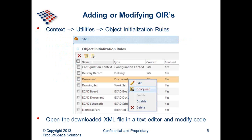Taking a look at adding or modifying these OIRs — to access them, you do that from the context, whether it's a product, organization, or site. You have your utilities area and you should have an object initialization rule section. If you click on that, you'll see the image on your screen. By right-clicking on the name or type, you get a pop-up menu that will allow you to download it. This will download an XML file that by default is named rule.xml. You can change the name to anything you want, then open that XML file in a text editor and make any modifications you want.